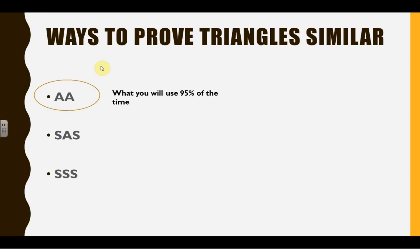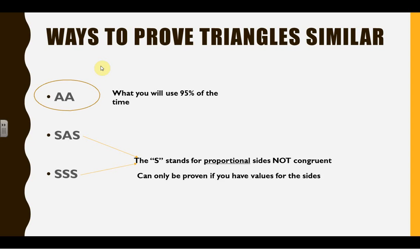You're going to use angle-angle 95% of the time. The other two — the S stands for proportional sides, not congruent. So you're only going to use these when you actually have proportional sides given to you — they flat out say these sides are proportional, or if you have numbers where you can prove that they're proportional.